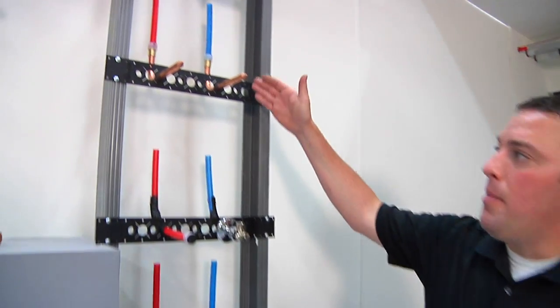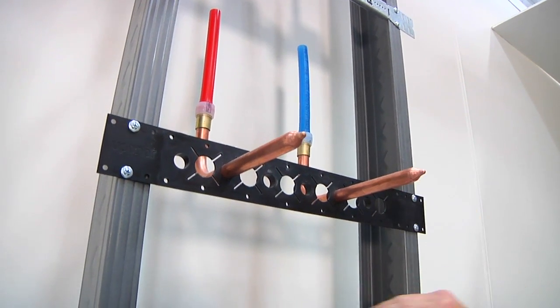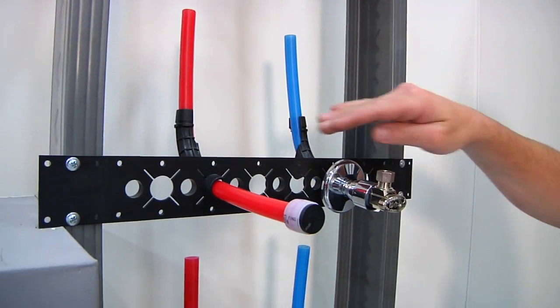First off, we can come out of the wall with the copper sub-L using the Uponor wall bracket, or we can do a PEX out of the wall system using the same wall bracket.